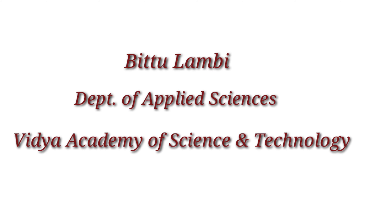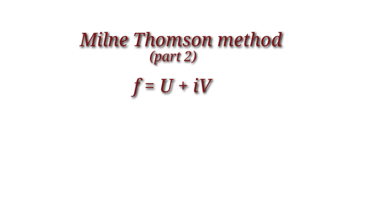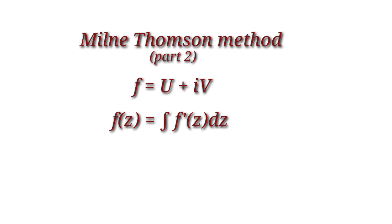Hi everyone, a warm welcome to the second part of the Milne-Thomson method. It's a direct method for finding an analytic function when its real part or imaginary part is given. Our analytic function is f = u + iv. We know f(z) is obtained by integrating f'(z), that is f(z) = integral of f'(z) dz.